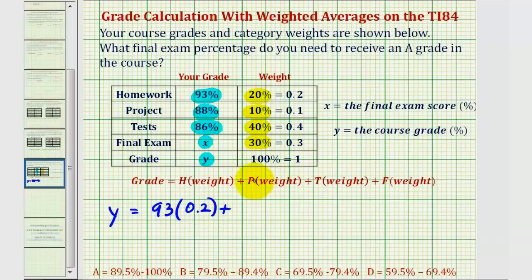Plus the project percentage, which is 88, times the weight of 10% as a decimal, 0.1, plus the test average of 86% times the weight of 40% or 0.4 as a decimal.